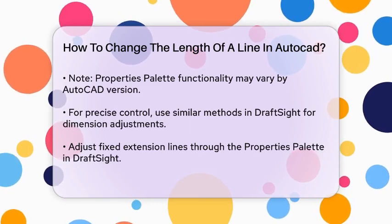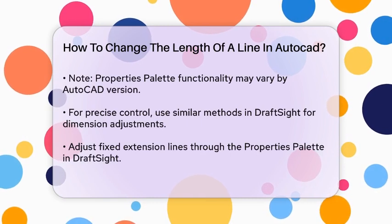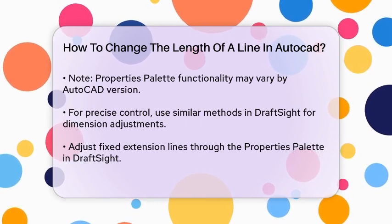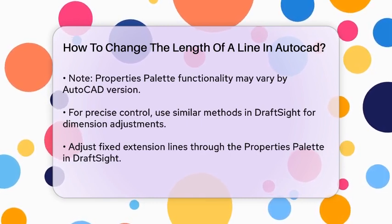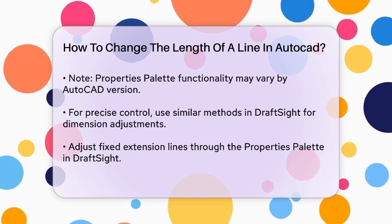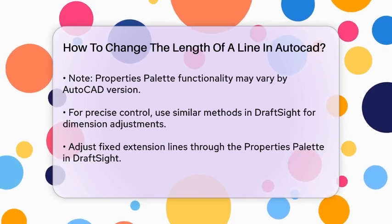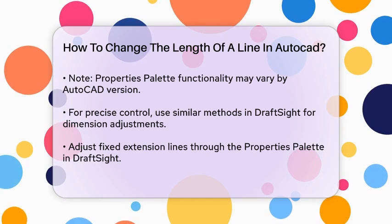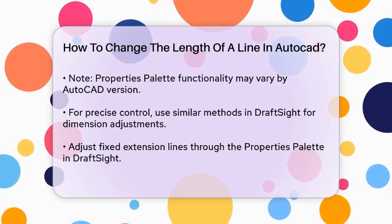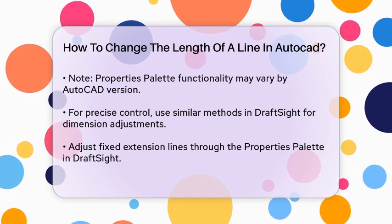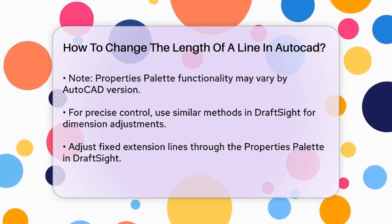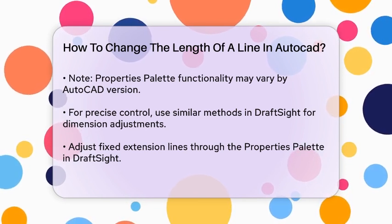For more precise control, especially when dealing with dimensions, you can adjust the length of fixed extension lines using the properties palette in a similar CAD software like DraftSight. Here, you access the properties palette for dimensions, adjust the X line fixed property, and apply the changes to selected dimensions. This method ensures you can customize the extension lines with precision.